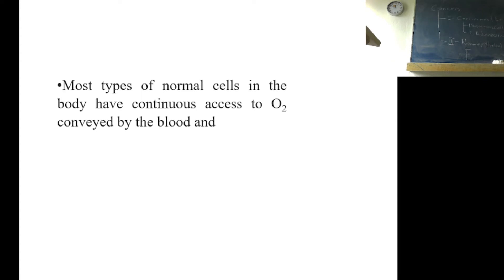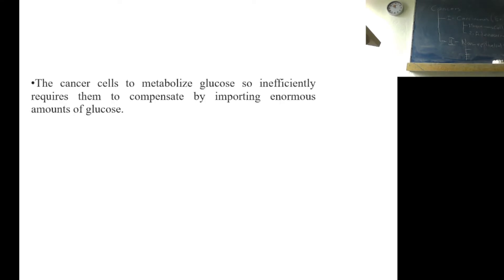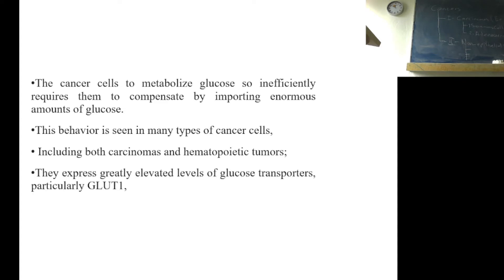Most types of normal cells in the body have continuous access to oxygen conveyed by blood. Therefore, they are able to metabolize glucose through this energetically far more efficient route. The cancer cells metabolize glucose so inefficiently, requires them to compensate by importing enormous amounts of glucose. This behavior is seen in many types of cancer cells, including carcinomas and hematopoietic tumors. Cancer cells express greatly elevated levels of glucose transporter, particularly GLUT1.